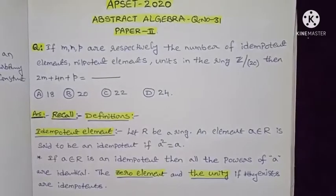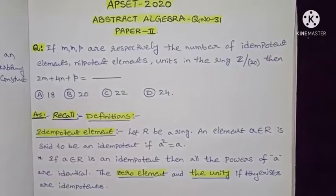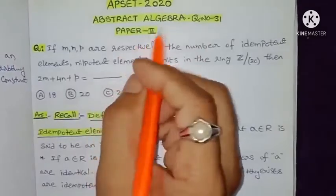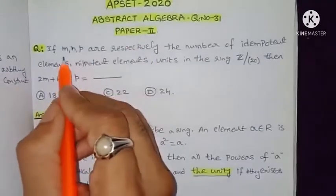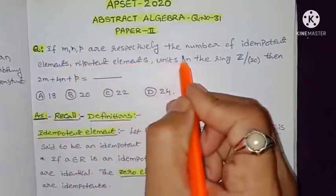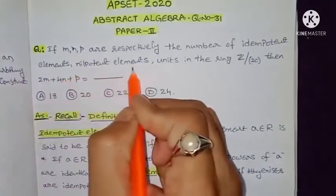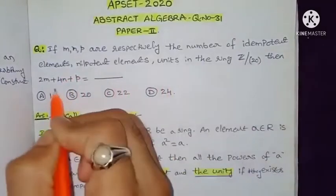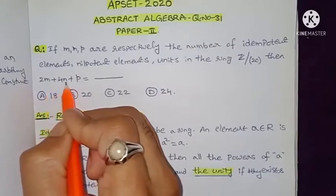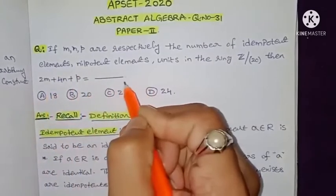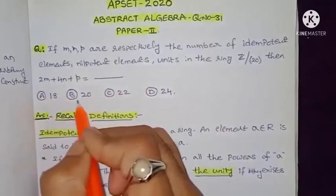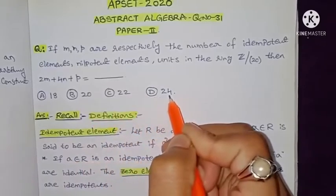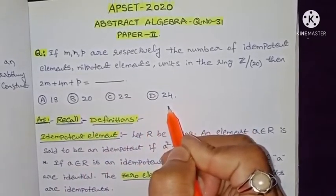Hi everyone, this is Ram Krishna, welcome to my channel. In this video I am going to discuss GATE 2020 Abstract Algebra question number 31 from PAPA 2. The question is: if m, n, p are respectively the number of idempotent elements, nilpotent elements, and units in the ring Z modulo 20, then the value of 2m plus 4n plus p is equal to — with options: (a) 18, (b) 20, (c) 22, (d) 24.